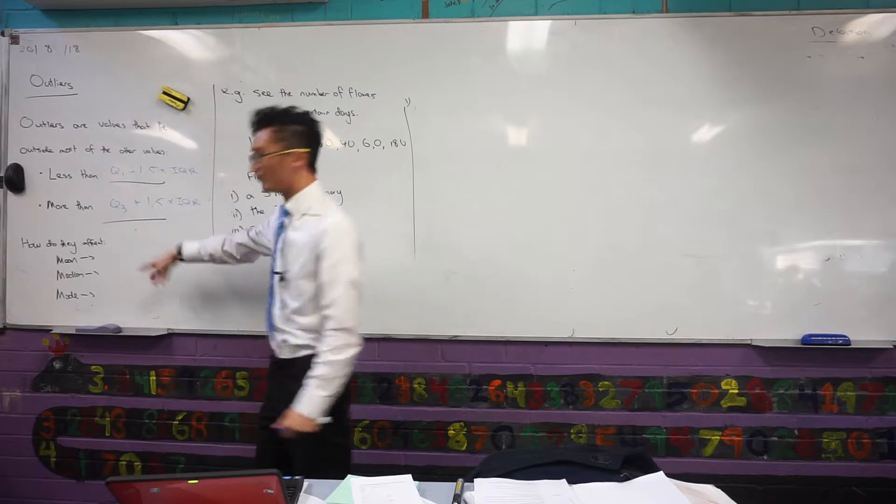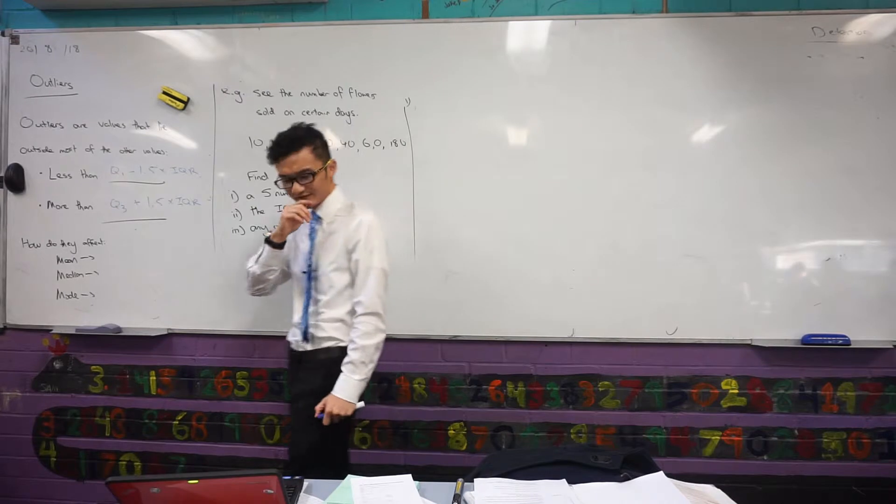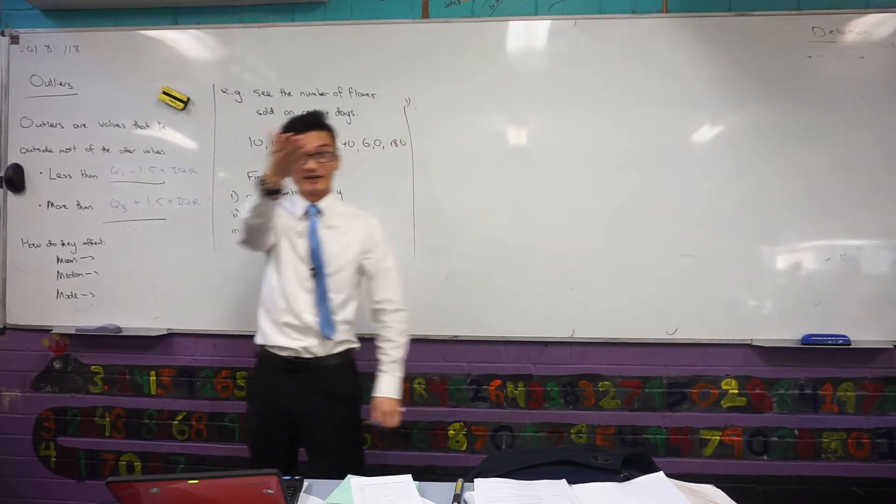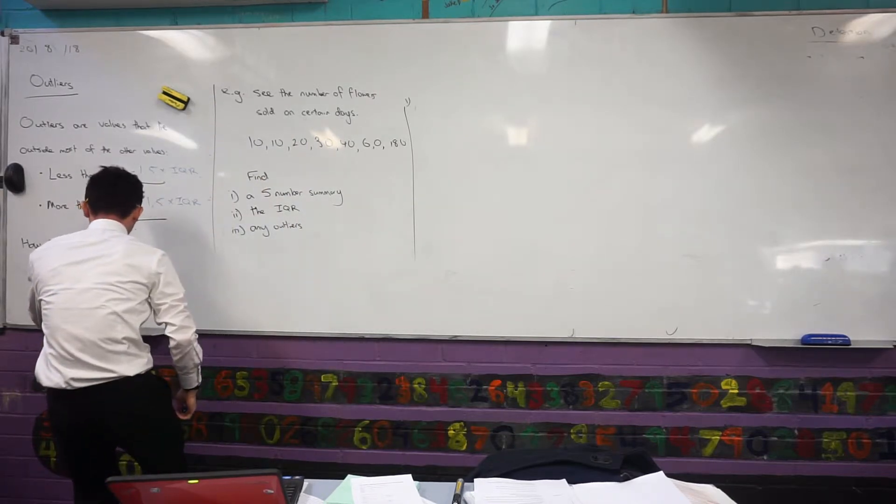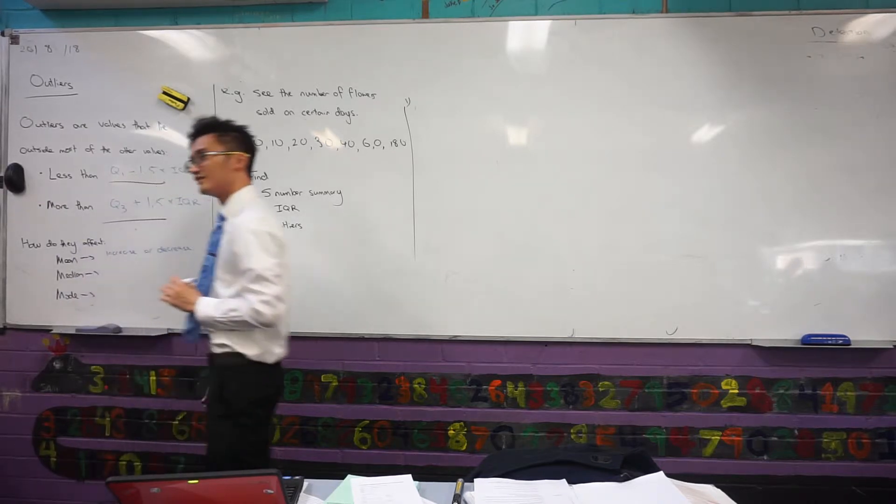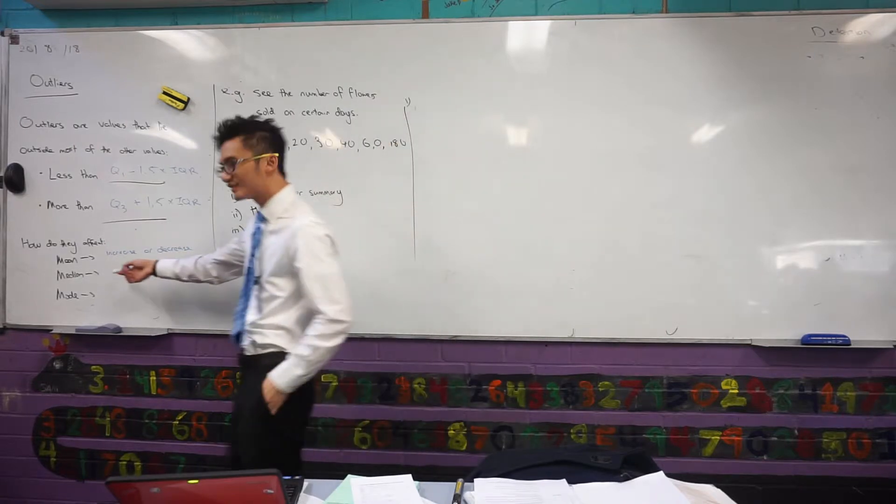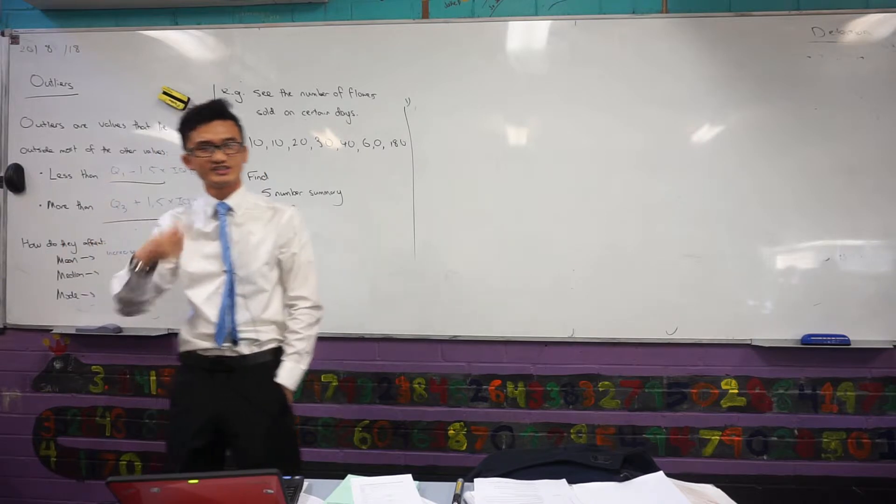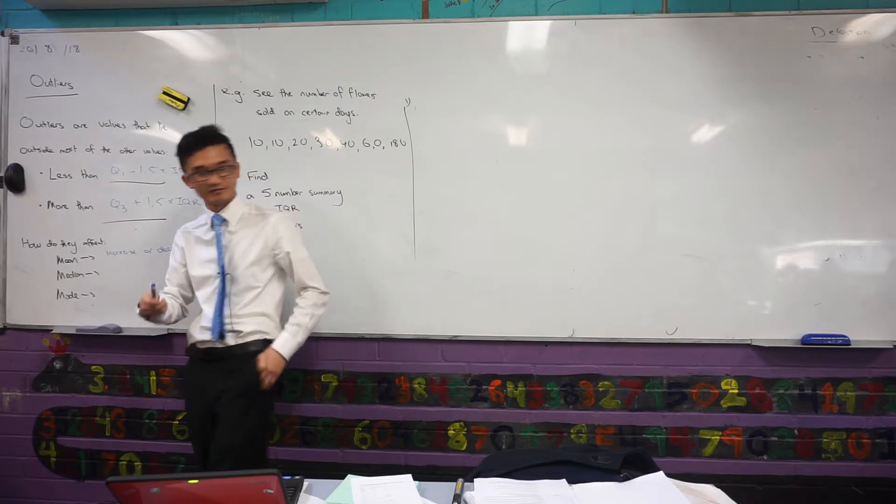Just for some food for thought, when I have outliers, how do they affect the mean again? It can increase or decrease depending on the type of outlier. Would it affect the median? Remember what does the median tell me? The median tells me what's in the middle, the position. So it doesn't care about the values, so it doesn't actually affect the median. Outliers don't affect the median.